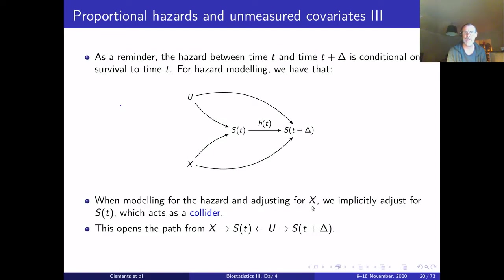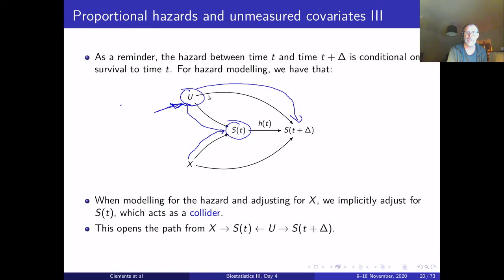If we are modeling the hazard and adjust for x, we implicitly adjust for S(t), which acts as a collider. This opens a non-causal path from x through S(t) around through u. Unless we can close that path by modeling everything associated with survival — which is very difficult in practice — we cannot get a causal estimator. This is generally true for the Cox model but not for other models, including Aalen's additive hazards model.